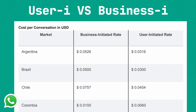You can see in the first column the country details, in the second column business-initiated pricing, and in the third column user-initiated pricing. If you compare the pricing between user-initiated and business-initiated, user-initiated messages have a lower price than business-initiated ones.